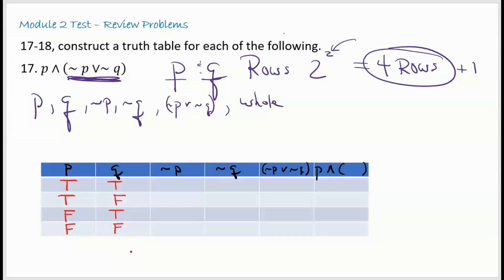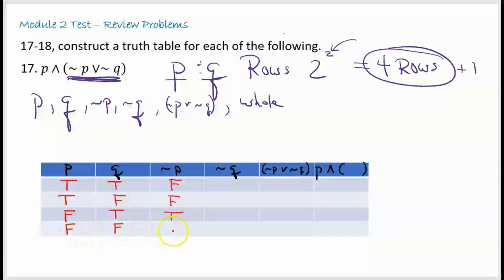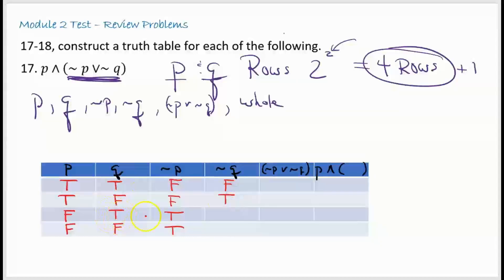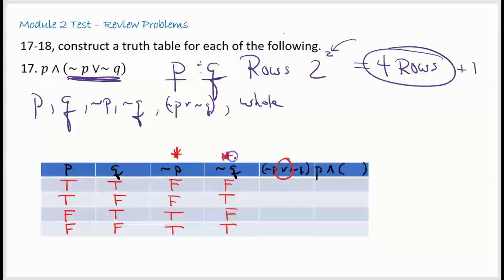Now to fill in not P, just negate everything in the P column: not true is false, not true is false, not false is true, not false is true. For not Q, look at the Q column only and change each value: true becomes false, false becomes true, true becomes false, false becomes true. Now for the OR statement — not P or not Q — you only need one value to be true for the result to be true.